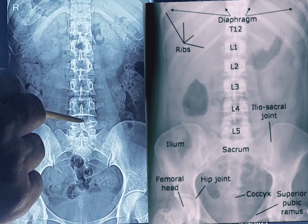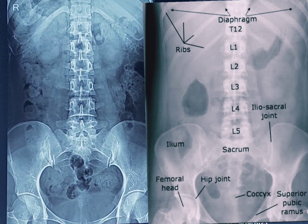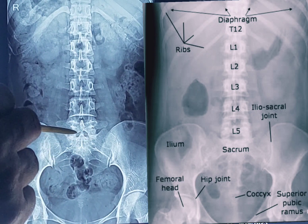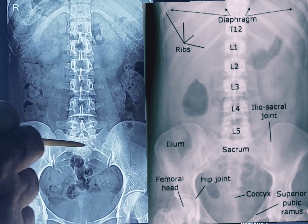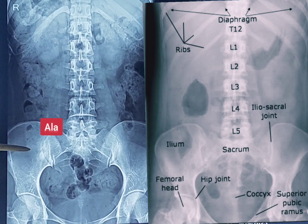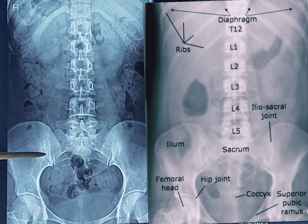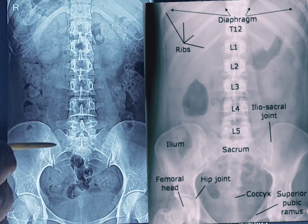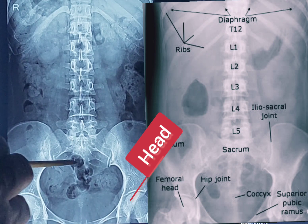Below the fifth lumbar vertebra is the sacrum. The sacrum consists of five sacral vertebrae. This is the first sacral vertebra, which articulates with the fifth lumbar vertebra. On this side and this side is the ala of the sacrum, which articulates with the ilium of the hip bone forming the sacroiliac joint on both sides. Then coming to the lower part, this is the head of the femur on each side, and this is the pelvic inlet.